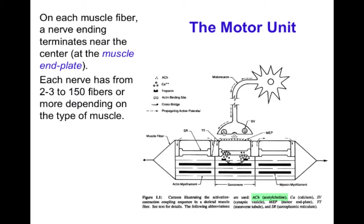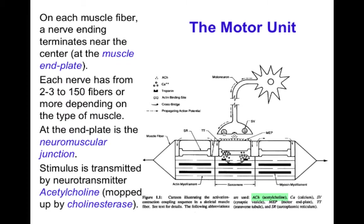The nerve-to-muscle coupling is called the neuromuscular junction. Equally important to the release of acetylcholine is its degradation, so that you can get a good frequency response — acetylcholine must be degraded almost as soon as it is released so that new release can occur, because frequency is used to modulate the strength of muscle contraction. The enzyme that degrades acetylcholine is acetylcholinesterase.